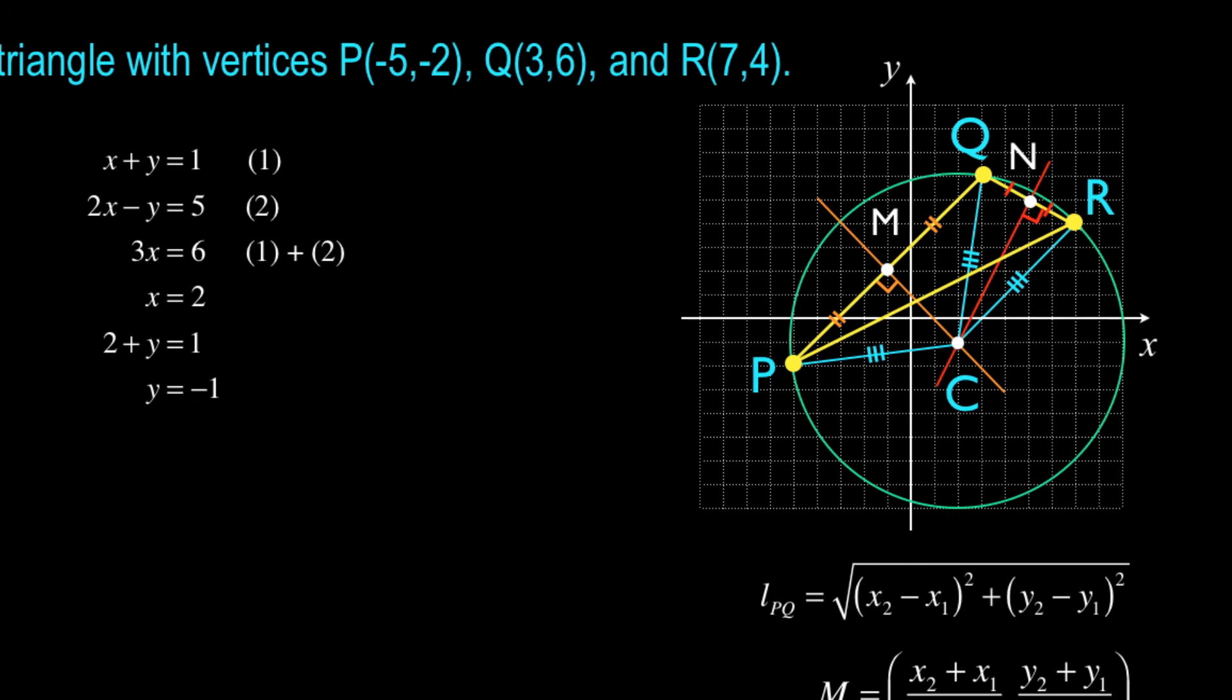Substituting in x = 2 in equation one, I get 2 + y = 1 or y = -1. And very easily, I locate the center of the circle to be at (2, -1). And that looks pretty representative as what you see in my diagram.